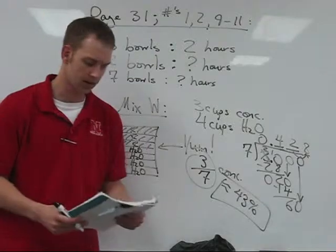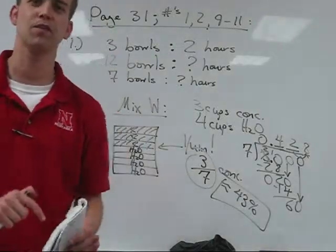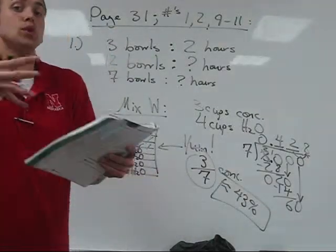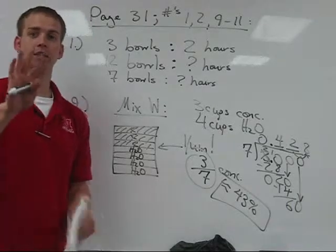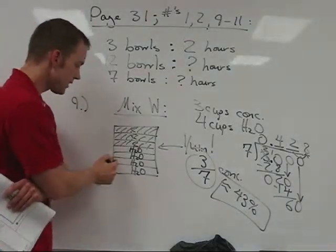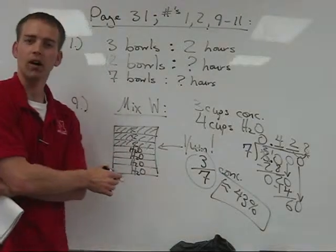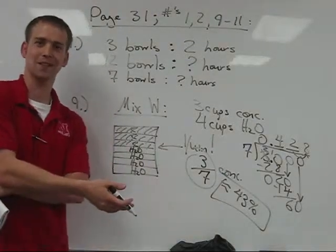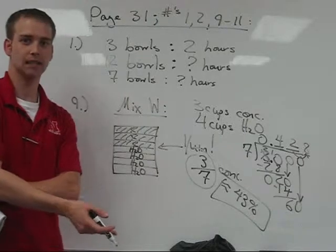Now, here's the neat thing about it, because on number ten, they're going to move on and say, which batch was the most apple-y? Of course, it's going to be the batch that has the most concentrate in it. Imagine you had six cups of concentrate and one cup of water. You're going to be drinking syrup, or at least it's going to seem that way, and some people are weird and they like that.